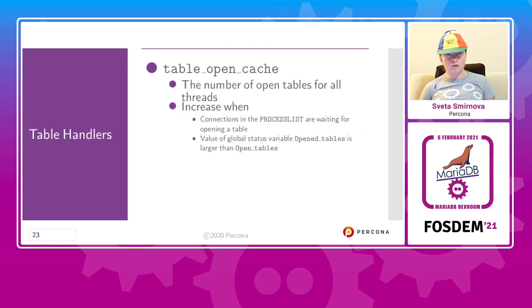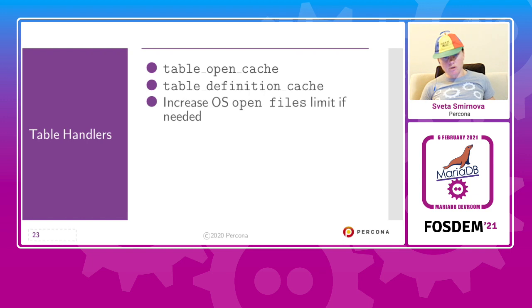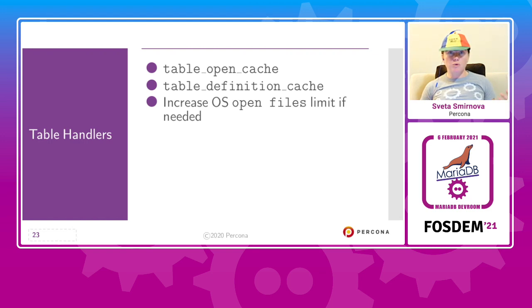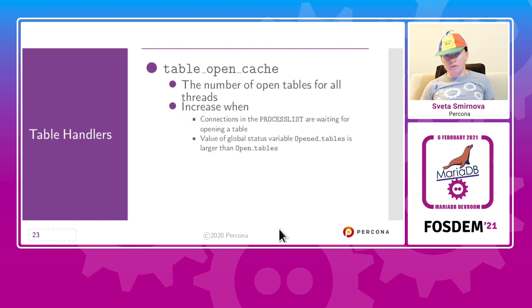Another option to tune is table_open_cache — the number of open tables for all threads, essentially file handles. table_definition_cache is also file handles but for table definitions. What is nice about these options is they are absolutely free: they are just file handles, so if you increase them you will get better performance without using any additional memory, CPU, or disk. If you see connections in the process list waiting for opening table, just increase these values and get better performance.